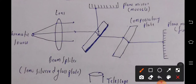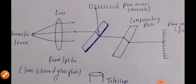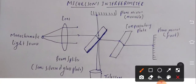After splitting, the light waves are incident on the mirrors. One light wave moves towards the movable plane mirror, while the other light wave passes through the compensating glass plate, suffers refraction, and then is incident on the fixed plane mirror. After being incident on the plane mirrors, the light waves retrace their original paths.